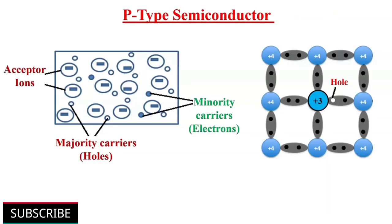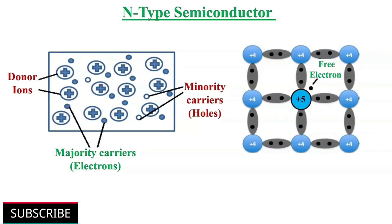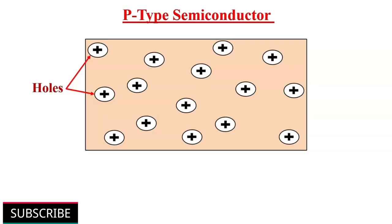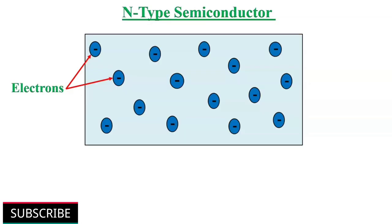In the previous video on semiconductors, we learned that by doping trivalent impurities to a pure semiconductor, a p-type semiconductor can be formed. By doping pentavalent impurities, an n-type semiconductor can be formed. P-type contains holes as majority charge carriers, while n-type contains free electrons as majority charge carriers.